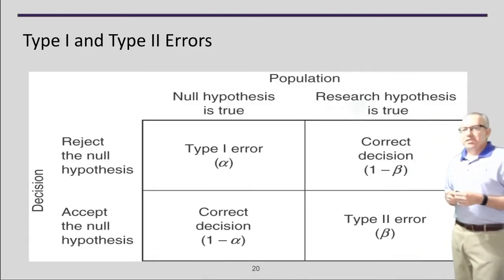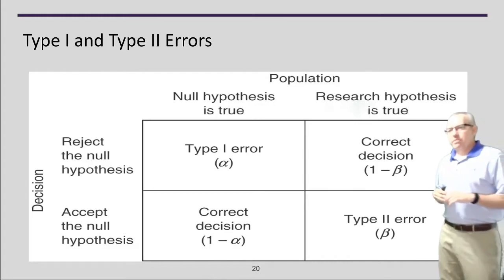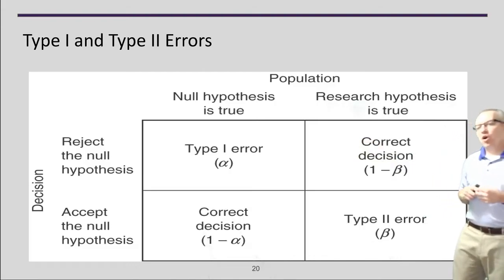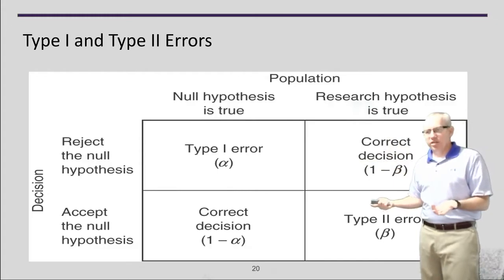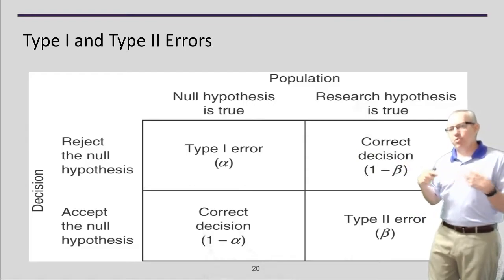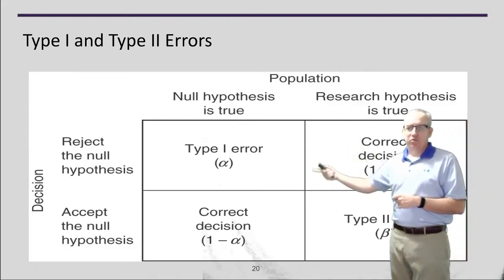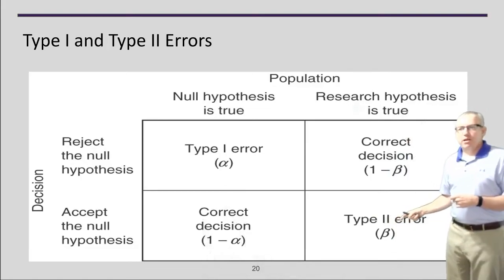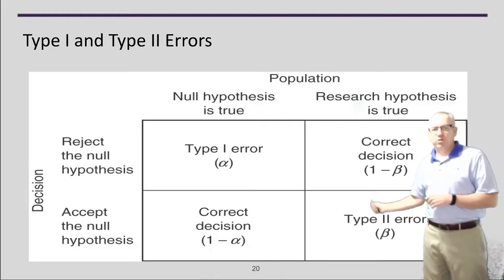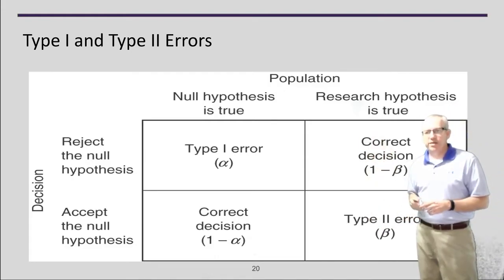We can also have type 1 and type 2 errors. Type 1 error — usually the most concerning — says the null hypothesis is true (there's no difference) but I reject it anyway. The higher you make your alpha value, the more likely you are to make a type 1 error. Type 2 error is the opposite and generally less risky: accepting the null hypothesis when there really is a difference. The alpha value is the one you need to worry about most.